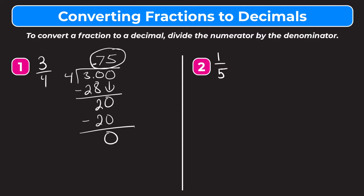Let's try number two. We have one-fifth. We're going to do the same thing — divide our numerator by our denominator. We write our division bar, put the numerator one underneath and the denominator five outside. Five is bigger than one, so we put a decimal point and add a zero. We bring our decimal point up, and now we ask how many whole groups of five go into ten. That's two. Two times five is ten. We subtract and that leaves us with zero. So one-fifth is equal to 0.2.